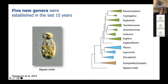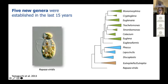One genus was described not only based on molecular data but also on the discovery of a new lineage — that is genus Rapaza, a monotypic genus with a single species, Rapaza viridis, discovered in 2014. It is a marine mixotrophic early-branching euglenophyte.